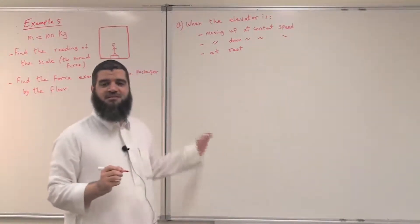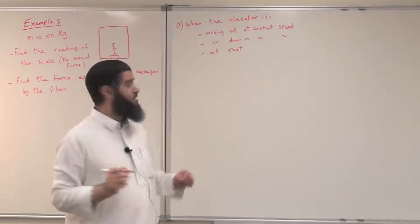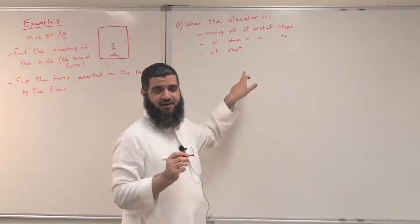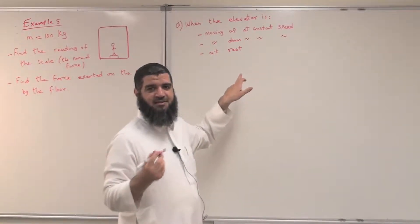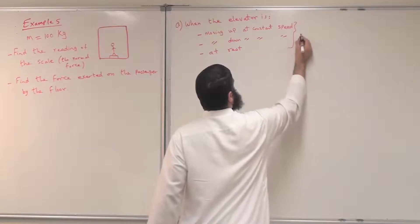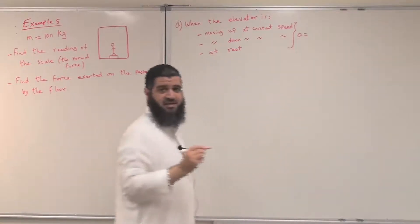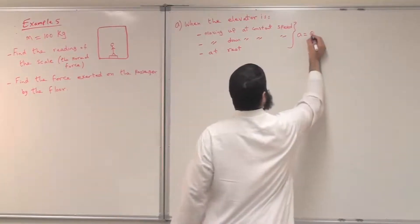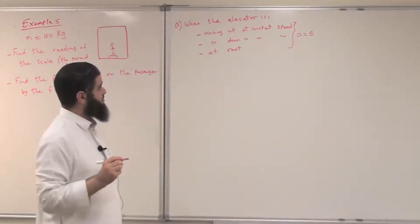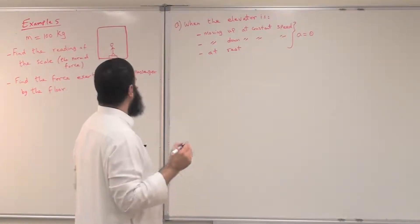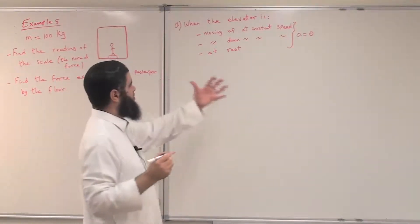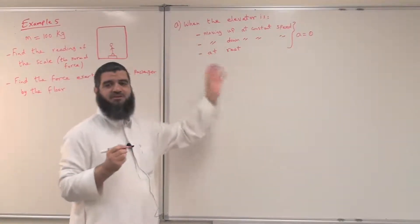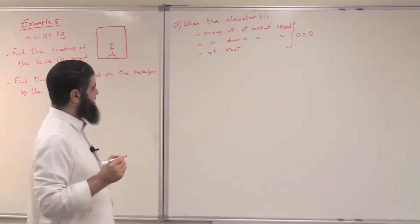What is common about these three situations — moving up at constant speed, moving down at constant speed, or at rest? If you remember from kinematics, this means that the acceleration is equal to zero in all these three cases. So how do we find the normal force when acceleration equals zero?